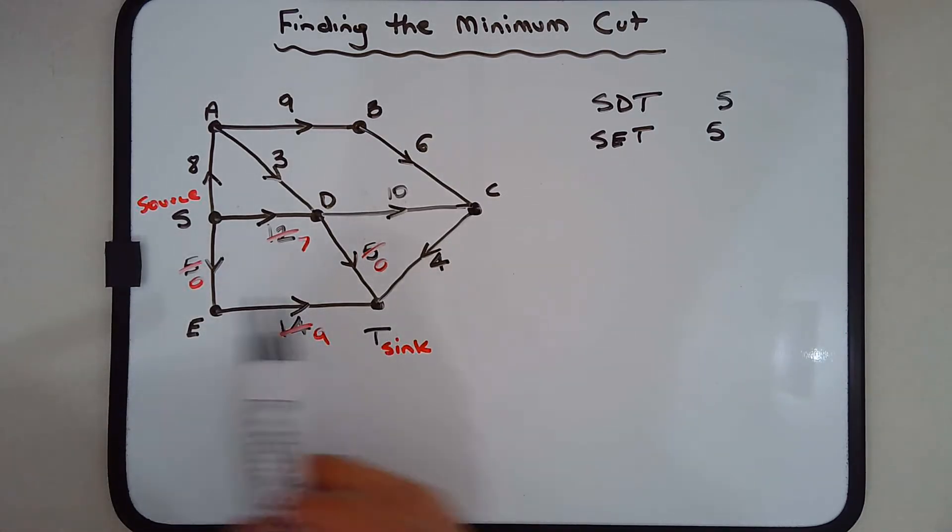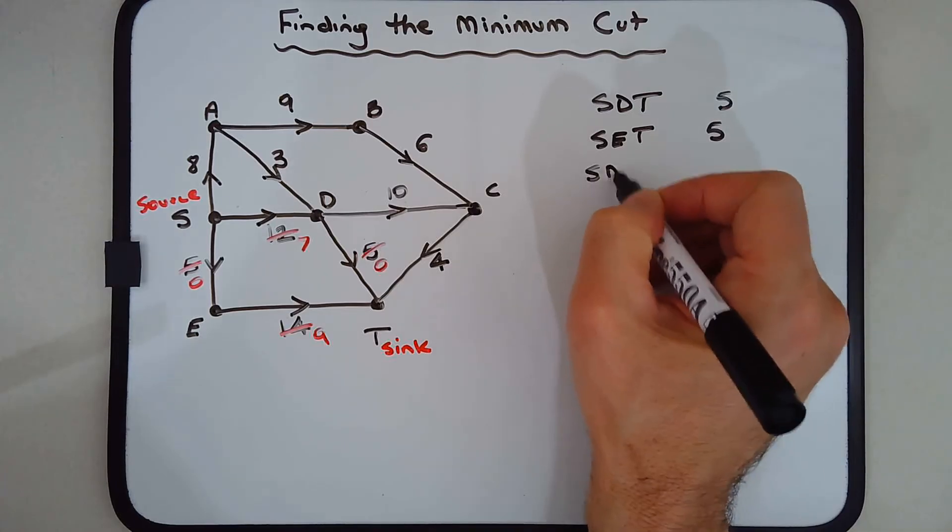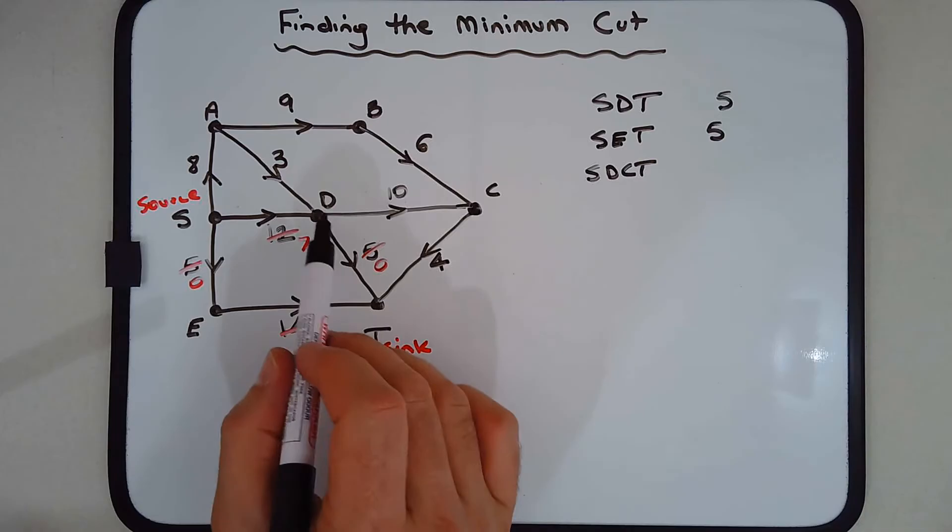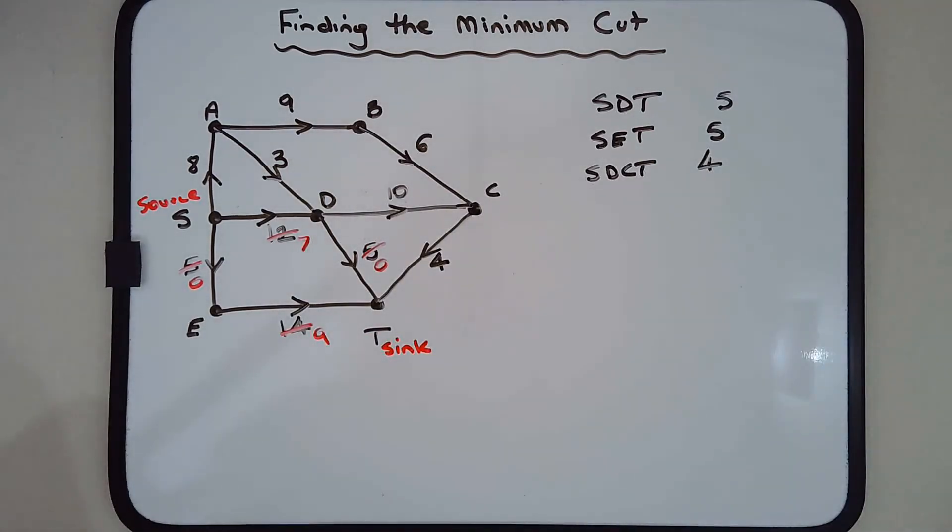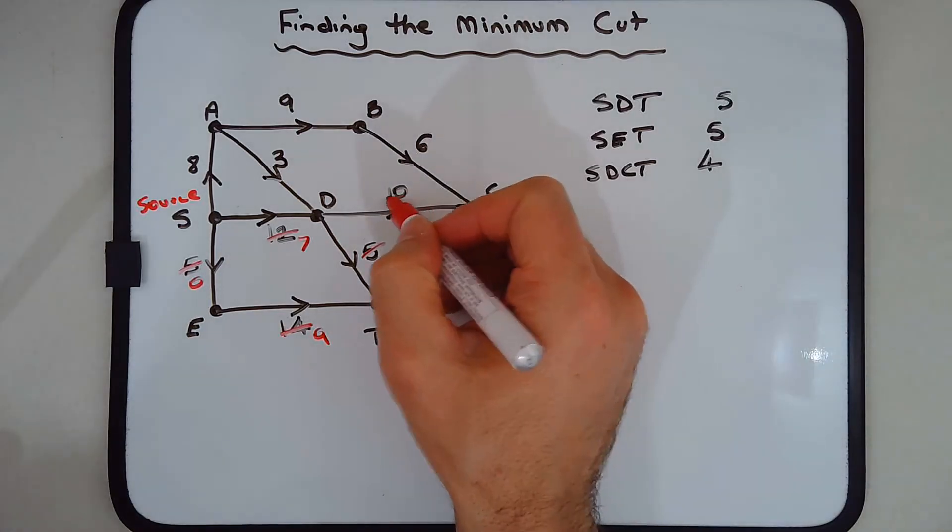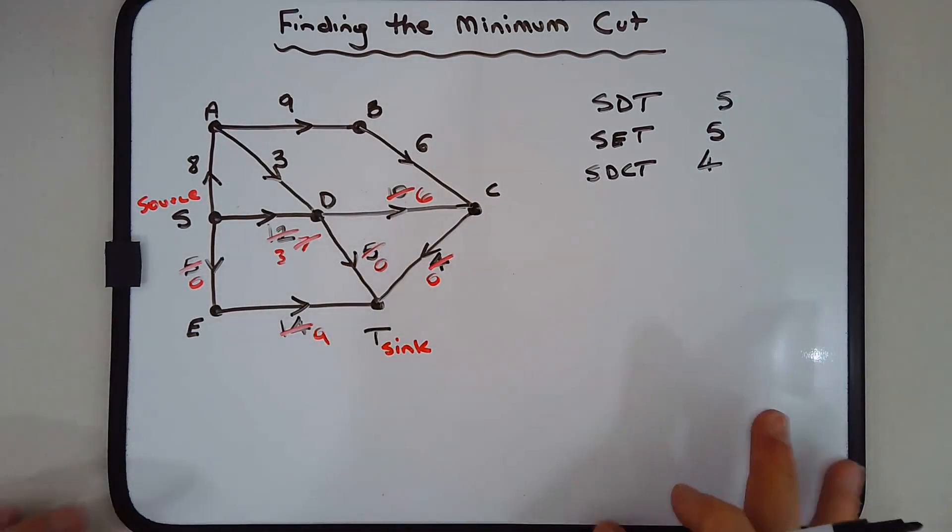Another way to get from S to T would be SDCT - that's using three edges or four vertices. SD is 7, DC is 10, CT is 4, so the lowest of those edges is 4. Let's subtract 4 from all of those, so that's 6 there and that becomes 3.